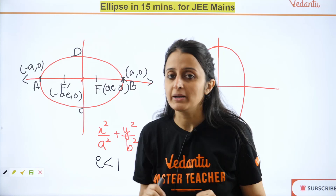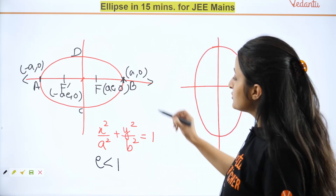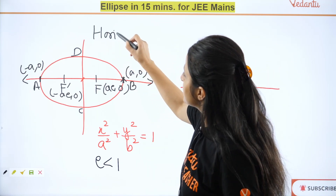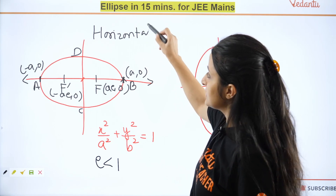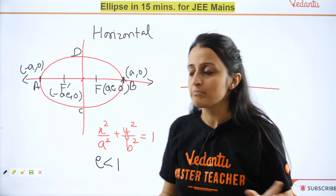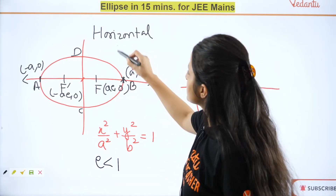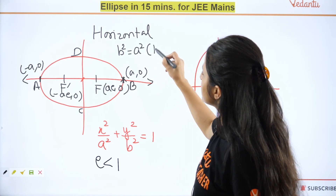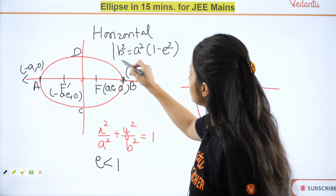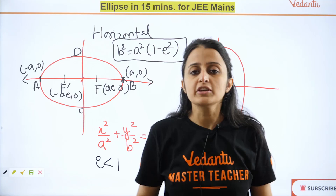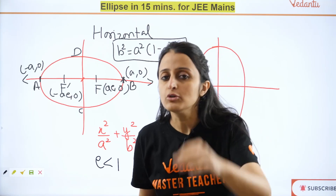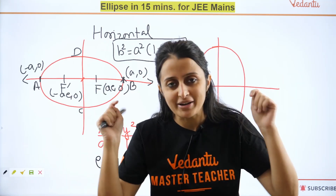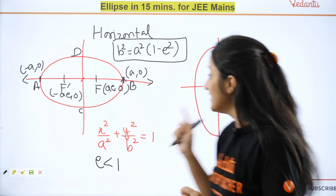The major axis is twice of a and the minor axis is twice of b — everything else revolves around these components. One super important result for the horizontal ellipse is: b² = a²(1 − e²). I'm giving you the download of all key things; if you want detailed notes, comment below.